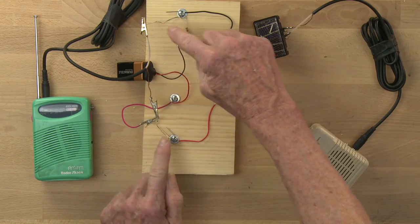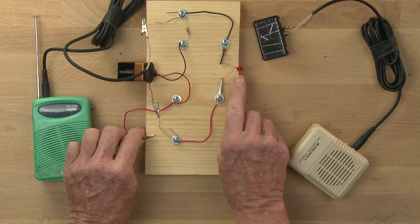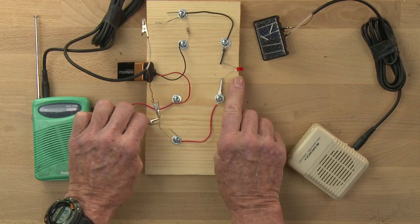The two alligator clips are hooked to the LED. The thing is, the signal from the radio is not enough voltage or current to light the LED.